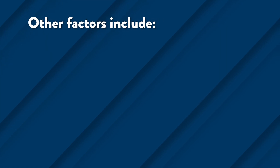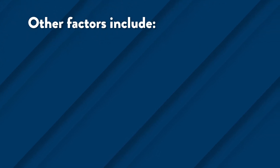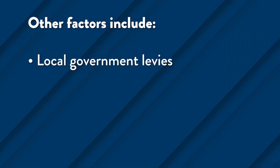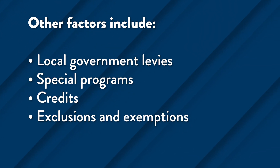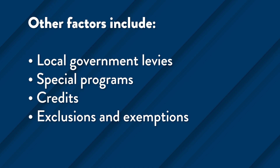There are other factors that affect the final amount of taxes, such as local government levies, special programs, credits, exclusions, and exemptions. These factors are implemented throughout the tax calculation process.